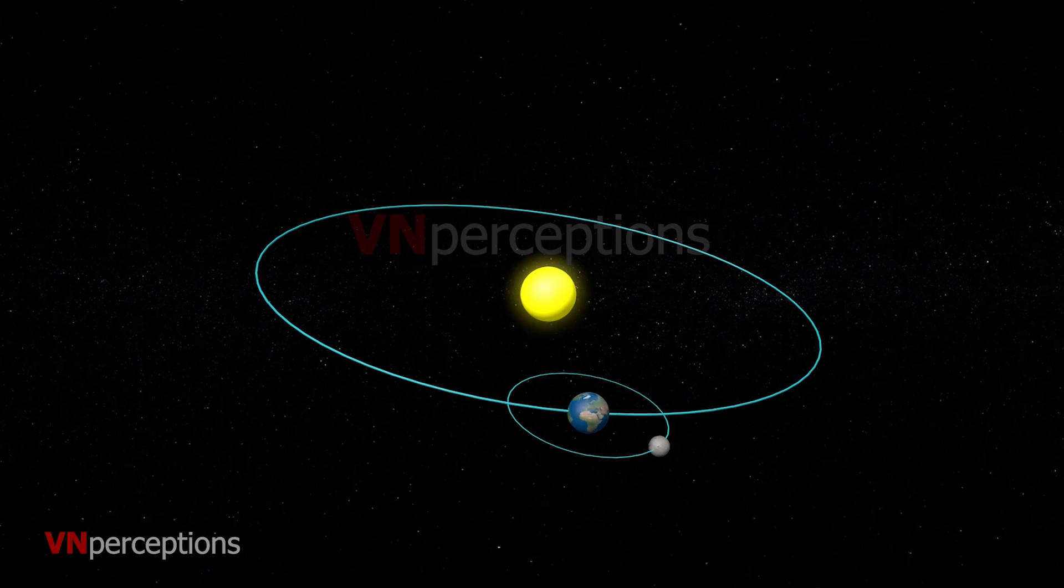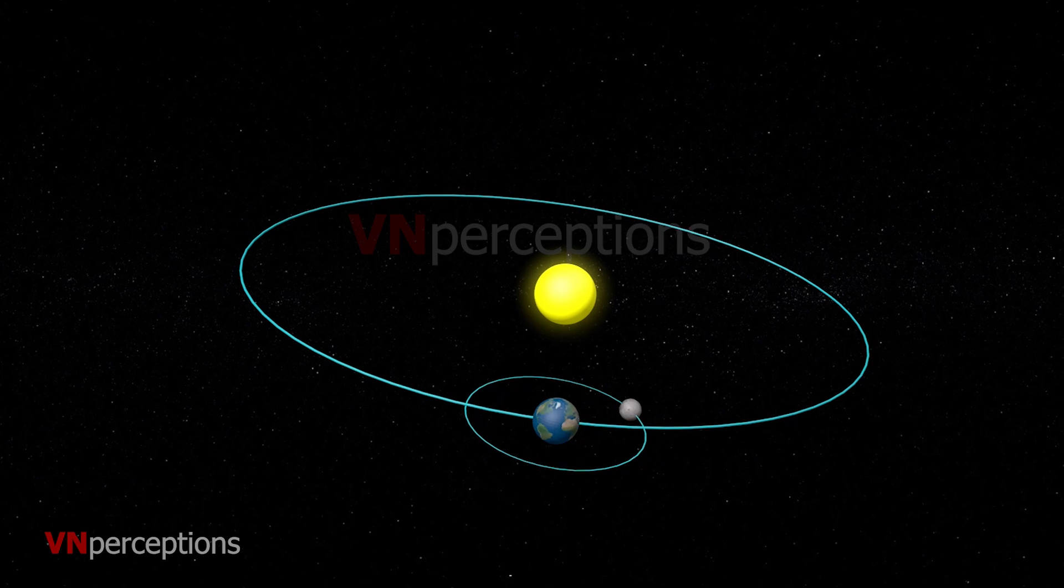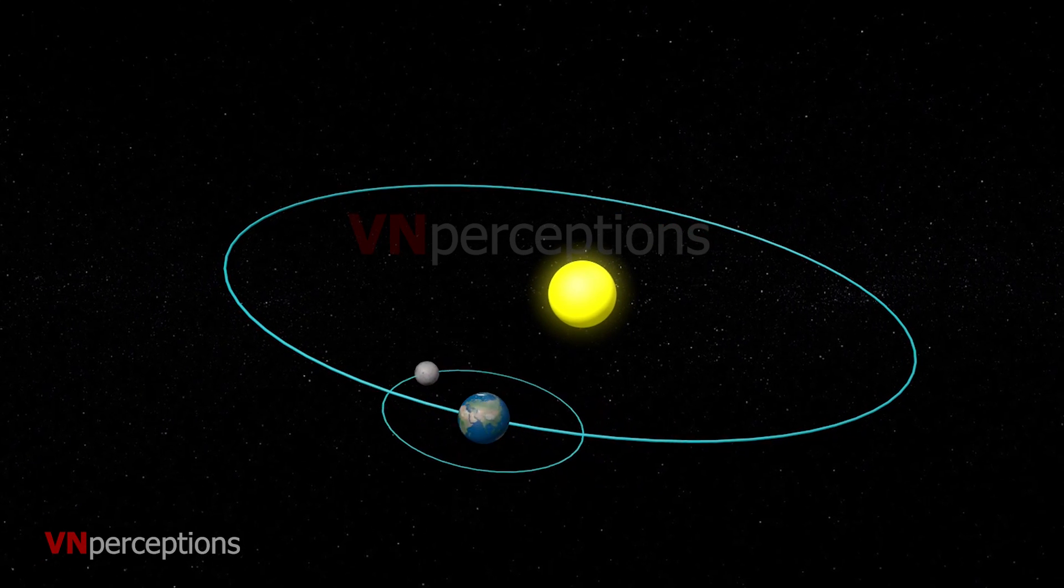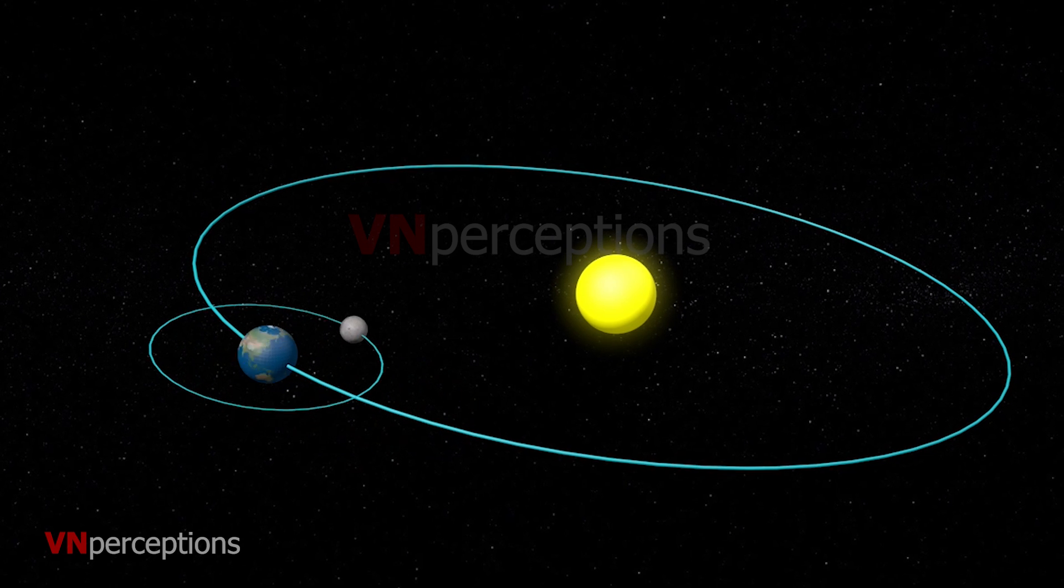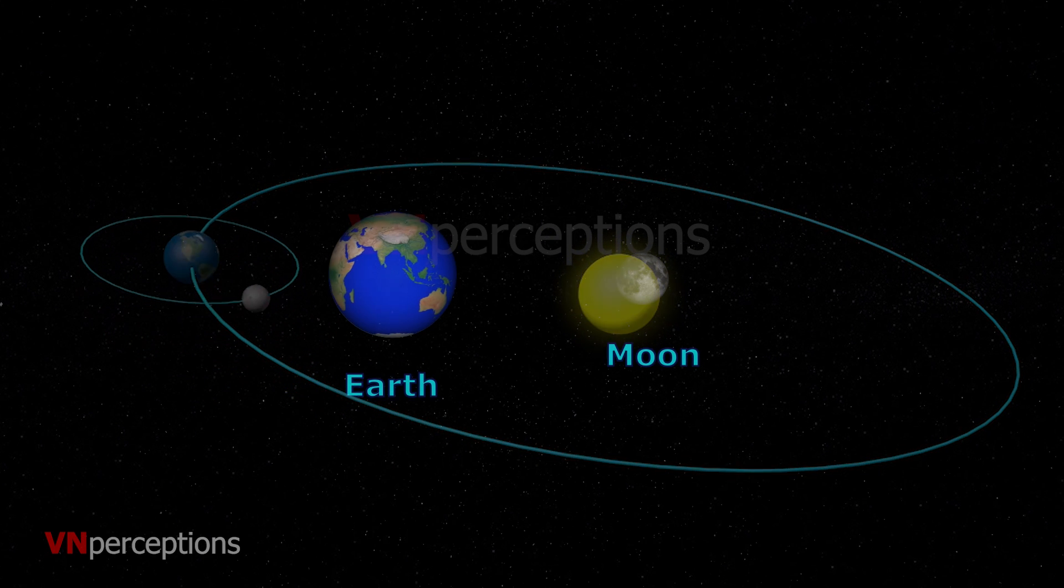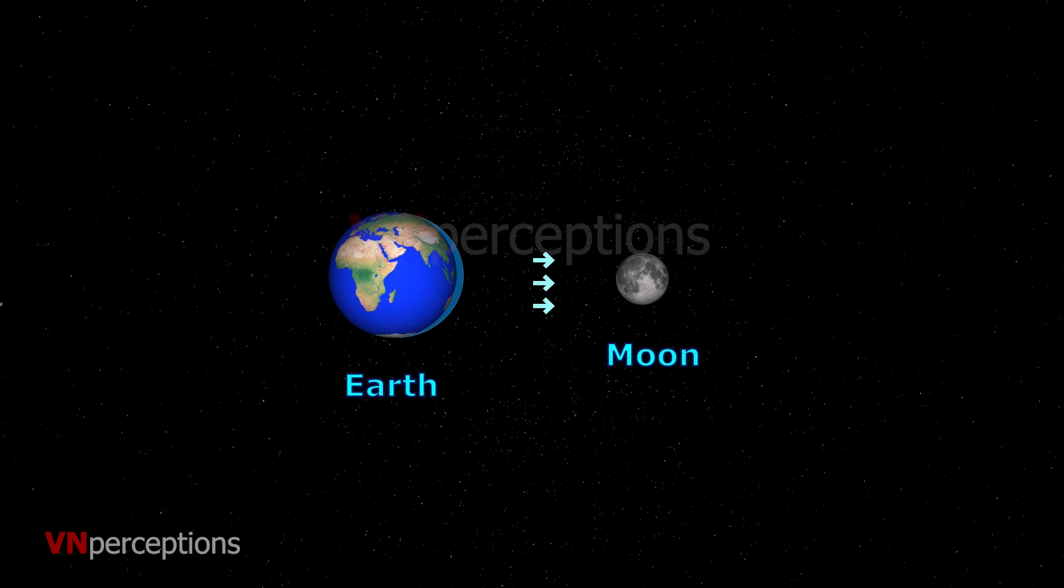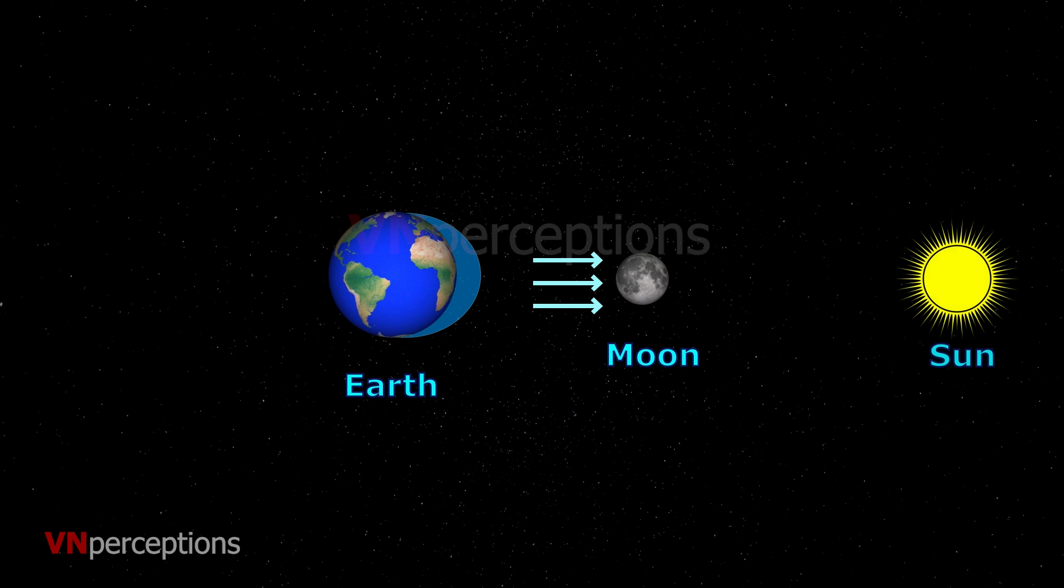Tides are strongly influenced by the gravitational force of the moon. This is due to the proximity, that is nearness to the earth. Its pull exerted on our planet attracts the water towards it. Similarly, when we take up the sun, it also attracts water surface the same way but slightly less than the moon does because the sun is further away compared to the moon.